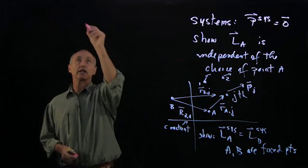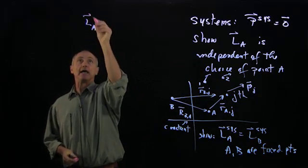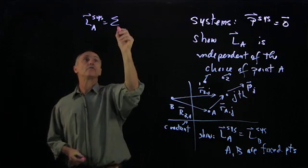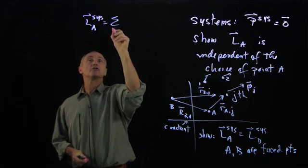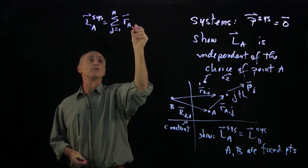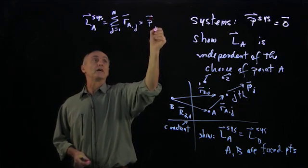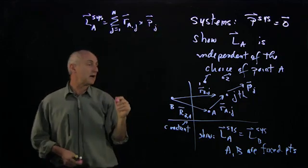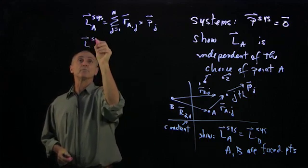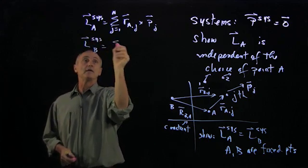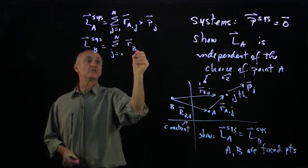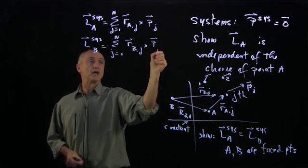Now let's calculate the angular momentum of the system about A. It's the sum over j from 1 to N of the vector R_AJ cross p_J. And the angular momentum of the system about B is the sum over j from 1 to N of R_BJ cross p_J.